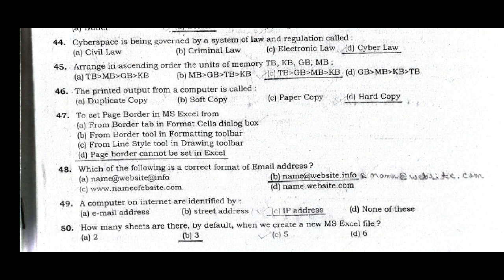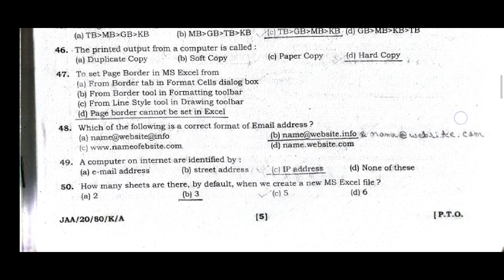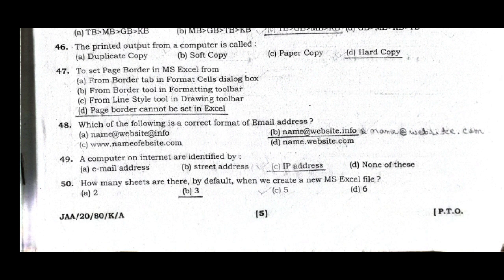Question 48: Which of the following is the correct format of an email address? Answer option B — name at website dot info or name at website dot com. Question 49: How many sheets are there by default when we create a new MS Excel file? Answer option B, three. Three sheets are there by default when we create a new Excel file.